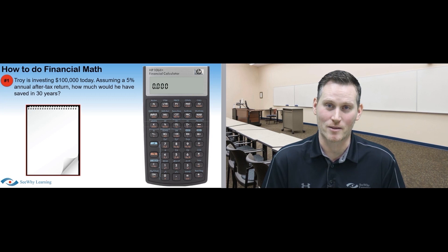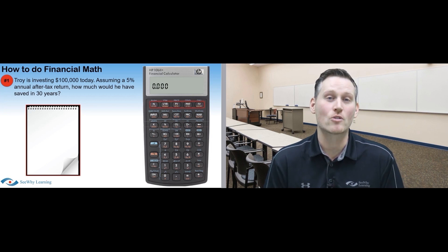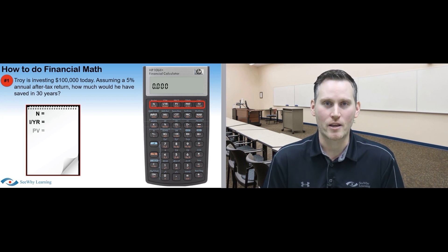I always start by creating a little template by jotting down the five potential variables. Remember, you don't have to memorize them. They're right there in front of you in a single row on your calculator. Again, they are N, IYR, PV, PMT, and FV.